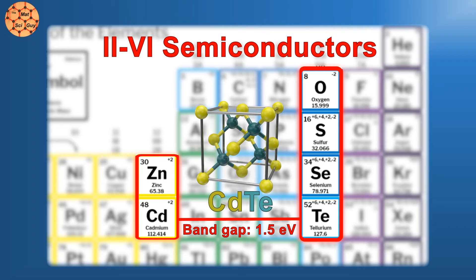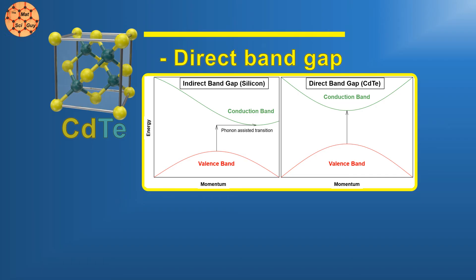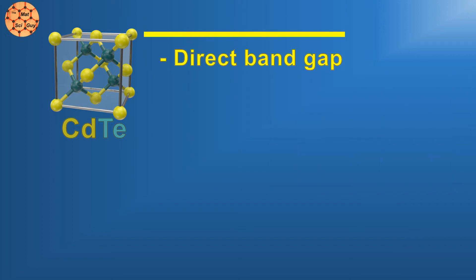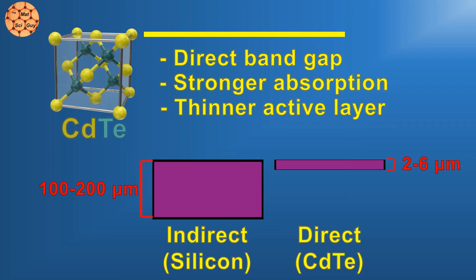Now, the bandgap alone doesn't make cadmium telluride a serious alternative to silicon, but it has several other things going for it. Cadmium telluride is a direct bandgap material, while silicon has an indirect bandgap. In a direct bandgap material, to make the jump from valence to conduction band, the electron doesn't need to change momentum. And if you're not familiar with the solid state physics behind any of this, don't worry. All it means for solar is that light absorption is much stronger. In an indirect bandgap material, light might have to pass quite deep into the material before it gets absorbed. Because the transition is easier in direct bandgap materials, typically light is absorbed very close to the surface.